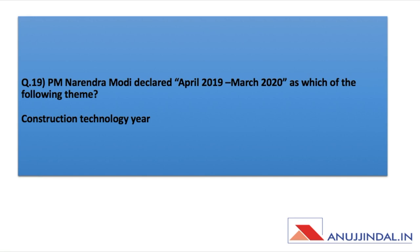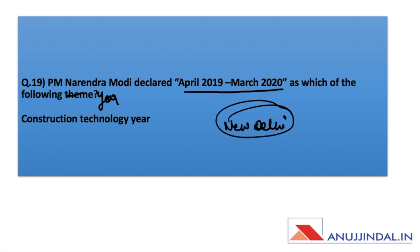Prime Minister Narendra Modi declared April 2019 to March 2020 as which of the following year? Construction Technology Year is the answer — this was announced at a conference held in New Delhi. These are memory-based questions and there can be slight variation, so if you have the proper questions you can mention them in the comment section.